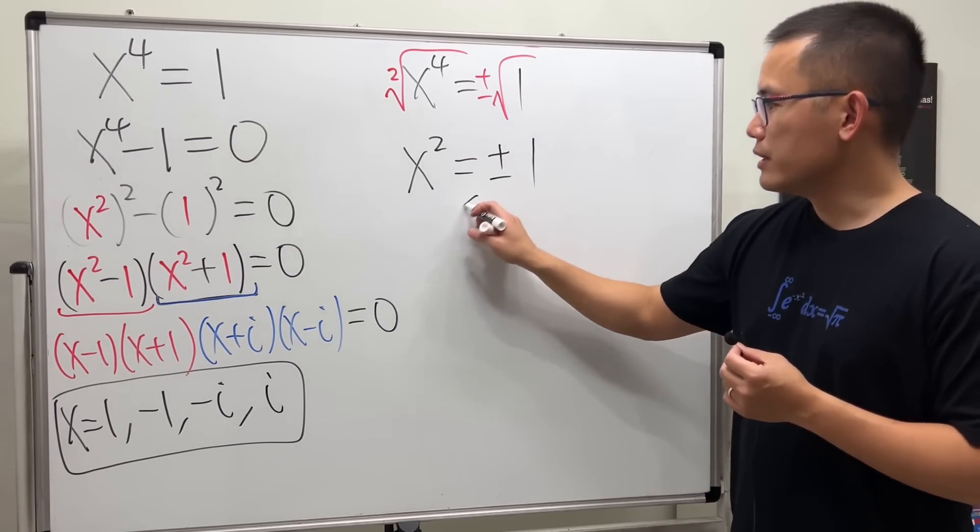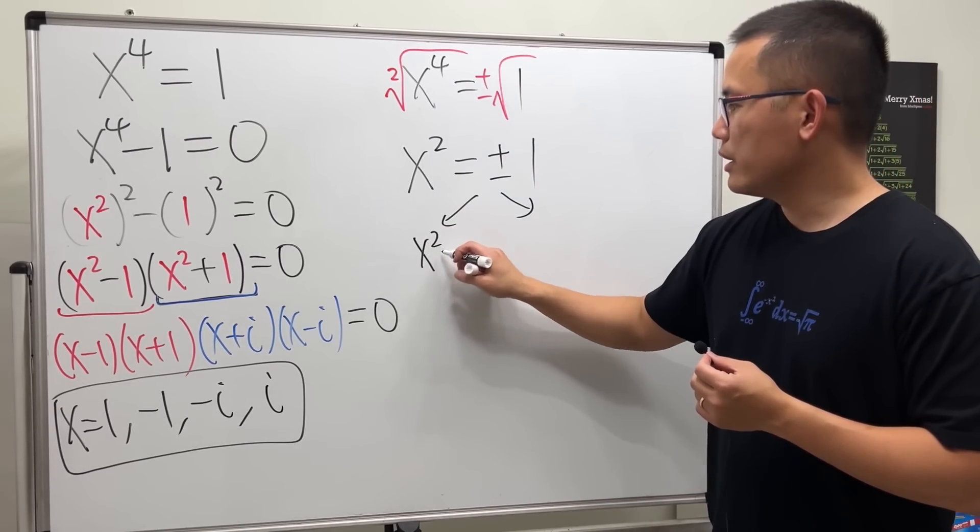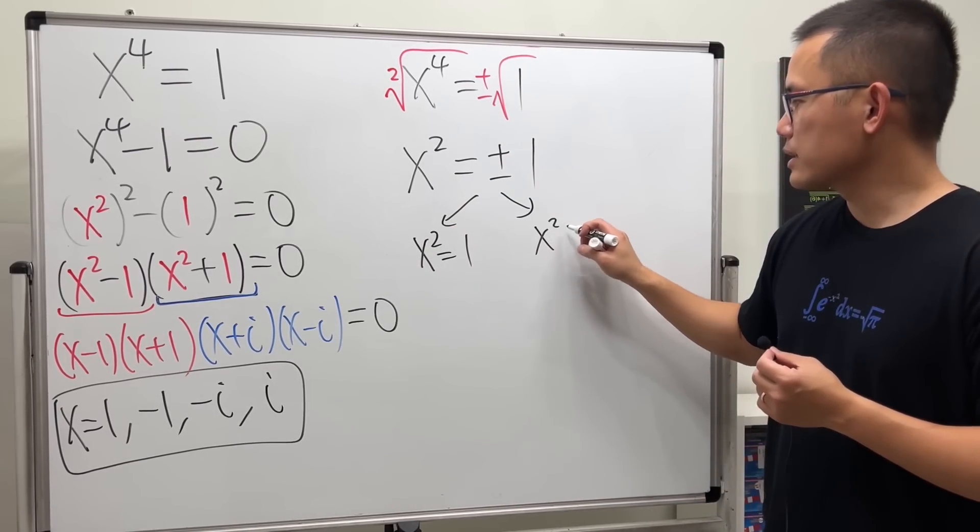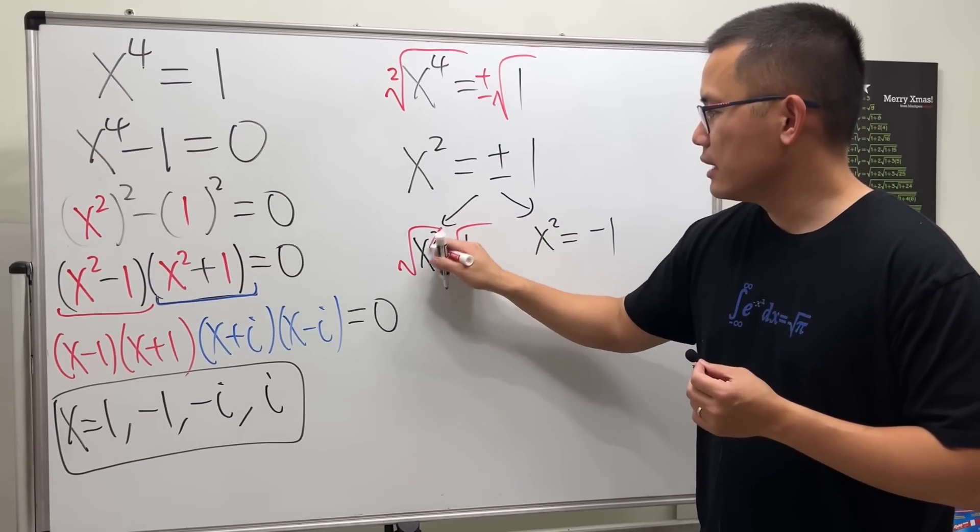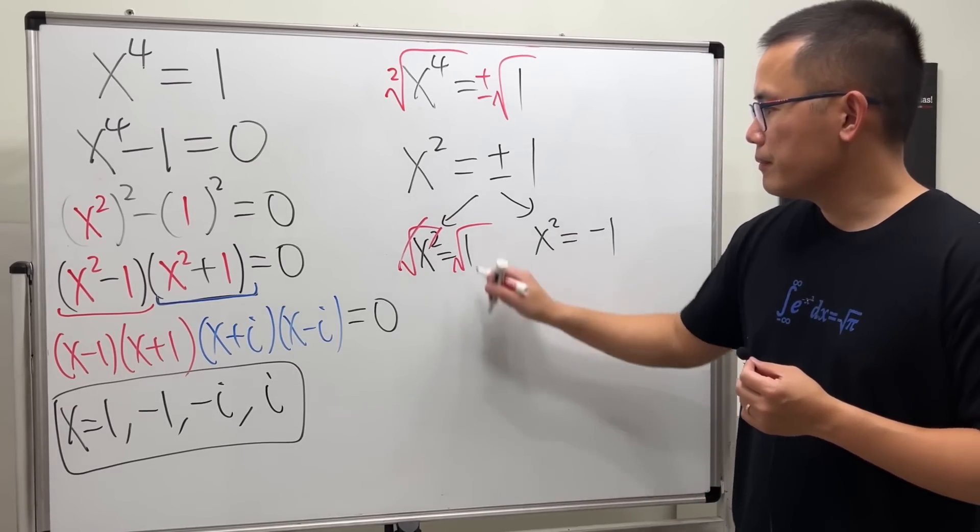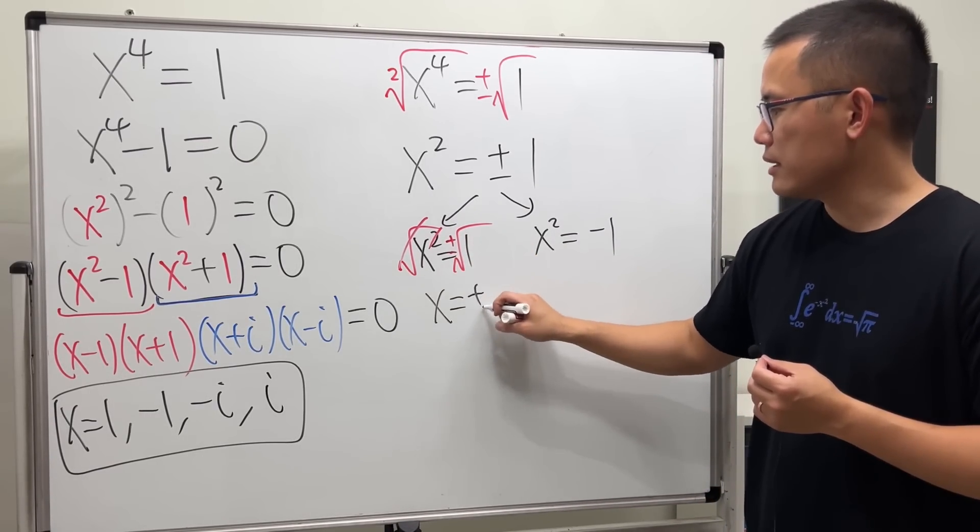So, in fact, for this, we have to end up with two equations. x squared equals 1, and the other one is x squared equals negative 1. Right here, take the square root of both sides again. This time, they cancel entirely. Plus or minus, and then we get x is equal to plus or minus 1.